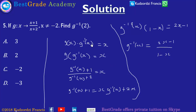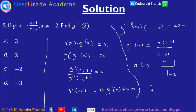Plugging in x equals 2: g inverse of 2 equals 2 times 2 minus 1 over 1 minus 2, which gives 4 minus 1 over negative 1, equal to negative 3. So the correct answer is negative 3. That completes questions 1 to 5. Don't forget to subscribe to get notified when I upload questions 6 to 10.